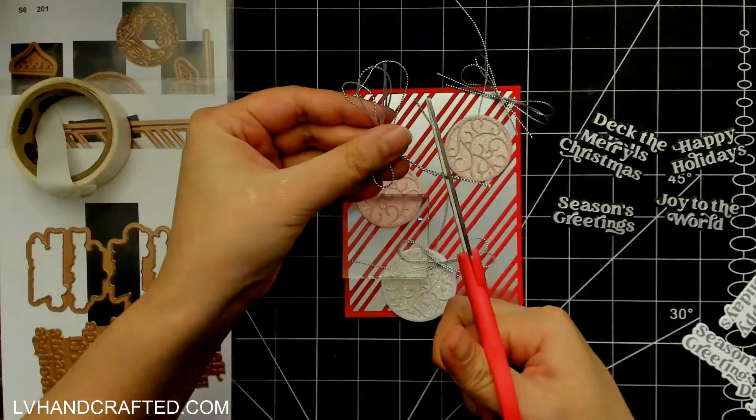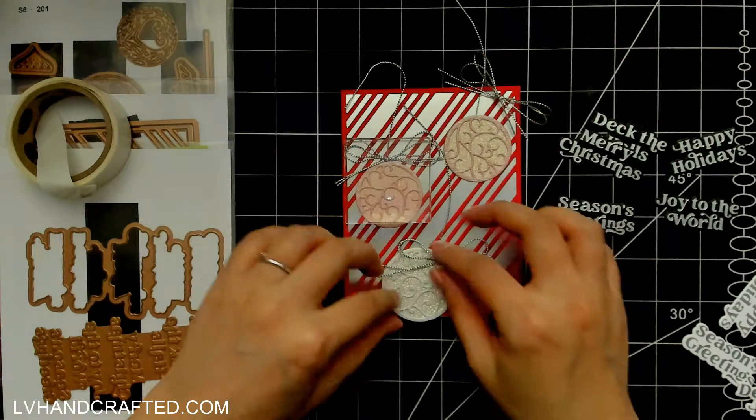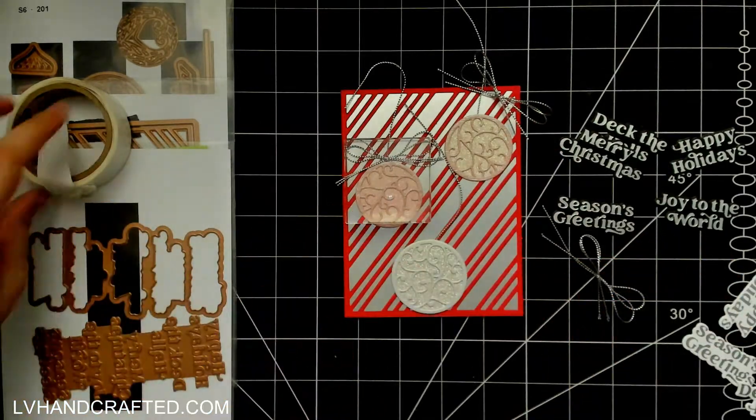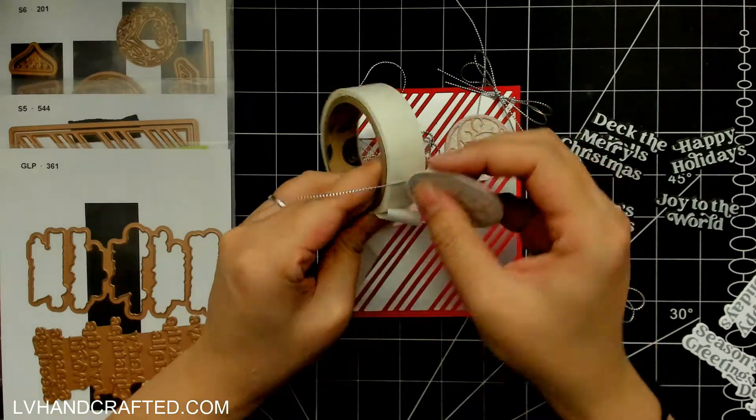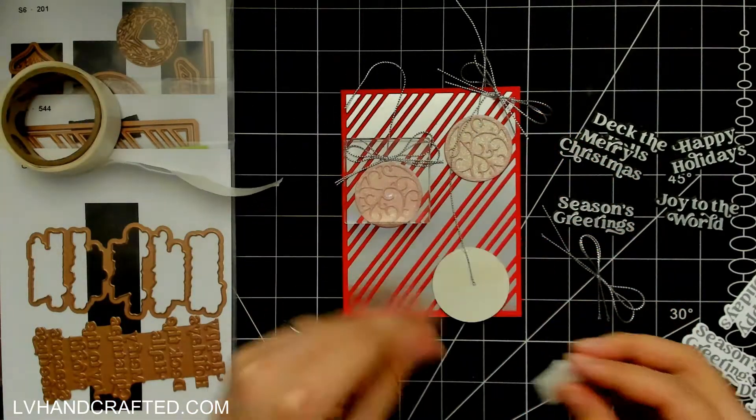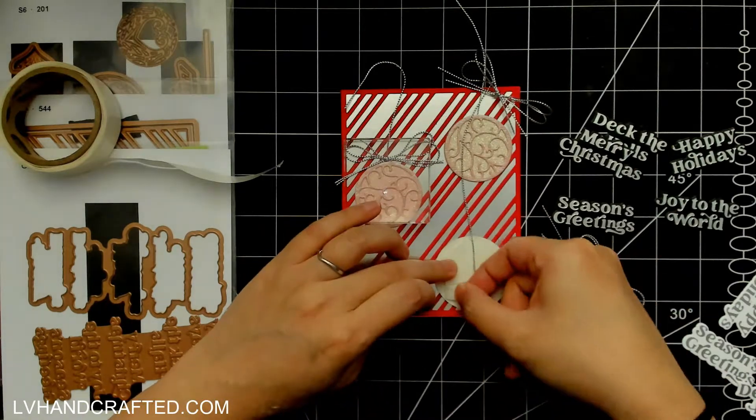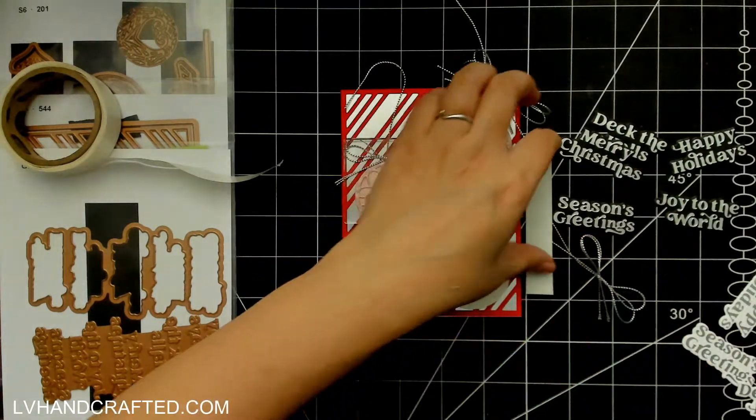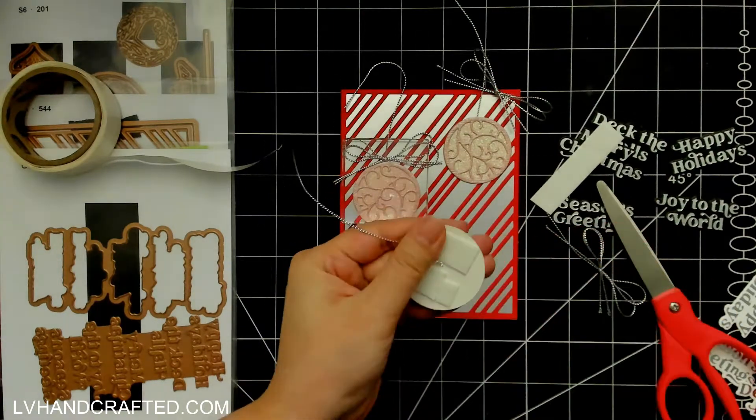But that's one of the reasons why I really love this background die because it is so general purpose you can really use it for anything and I don't think it's so strongly reminiscent of candy stripes that you couldn't use it throughout the rest of the year as well.